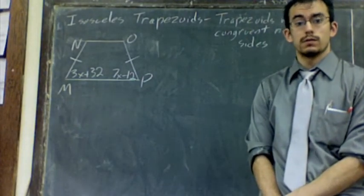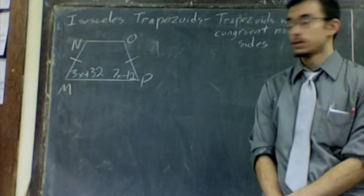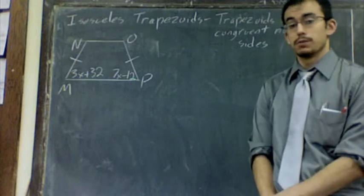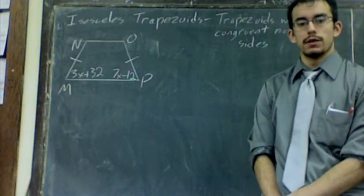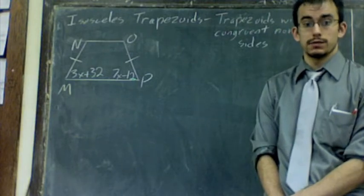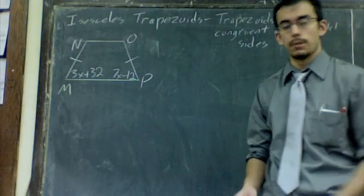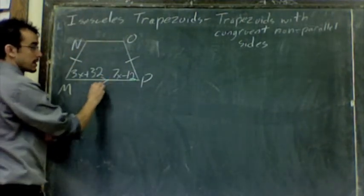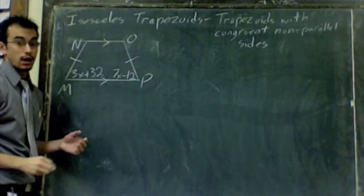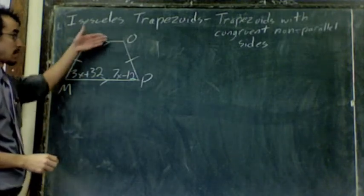Okay, here we're going to work with isosceles trapezoids. In this particular problem, we're given an isosceles trapezoid and the two angles that I gave you were the base angles, two angles that are along a parallel side. In this particular problem, I'm telling you that MP is parallel to NO. The top is parallel to the bottom.